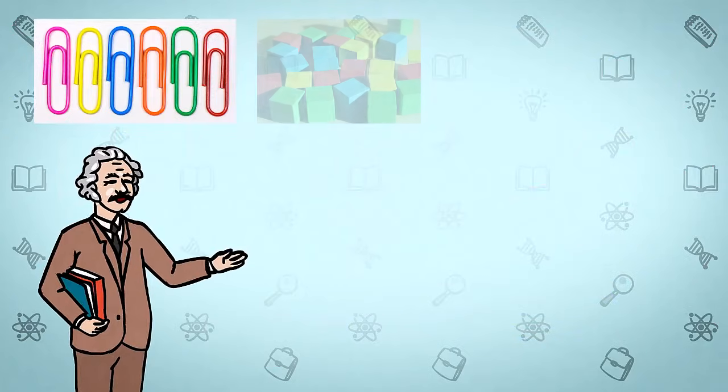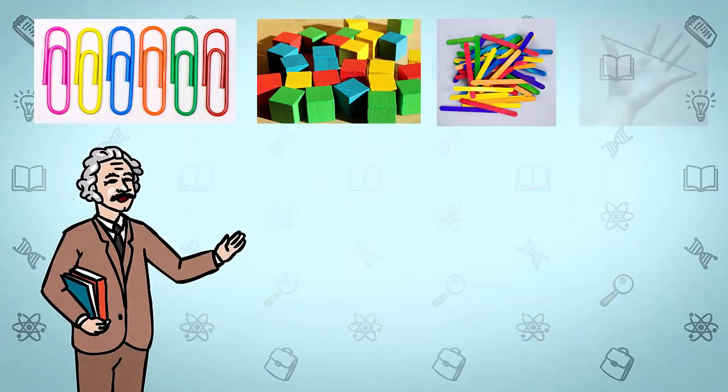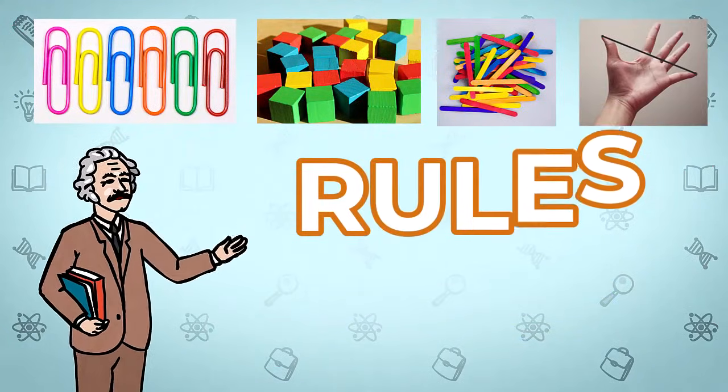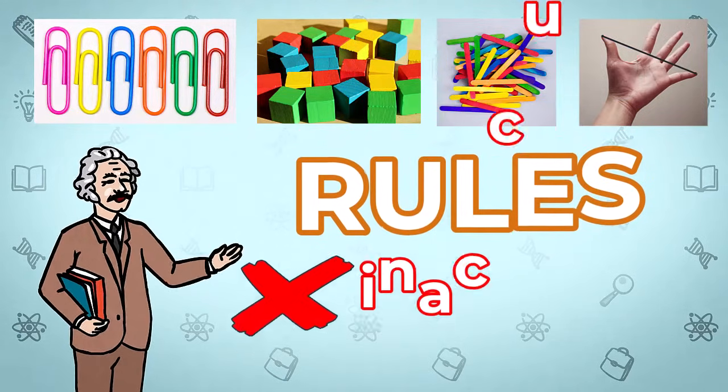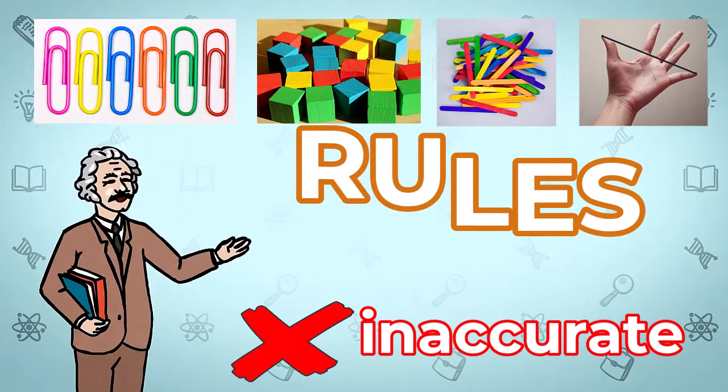When using informal or non-standard units to measure length, there are a few rules that we need to stick to so that we measure accurately. If we don't stick to the rules, we would end up getting different measurements every time and they would be inaccurate.